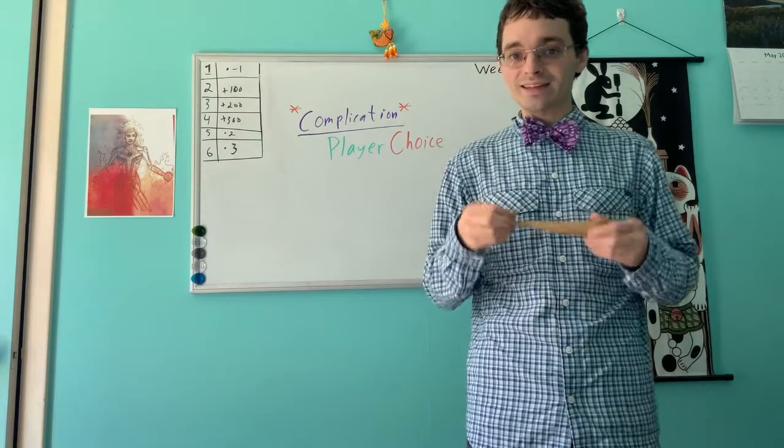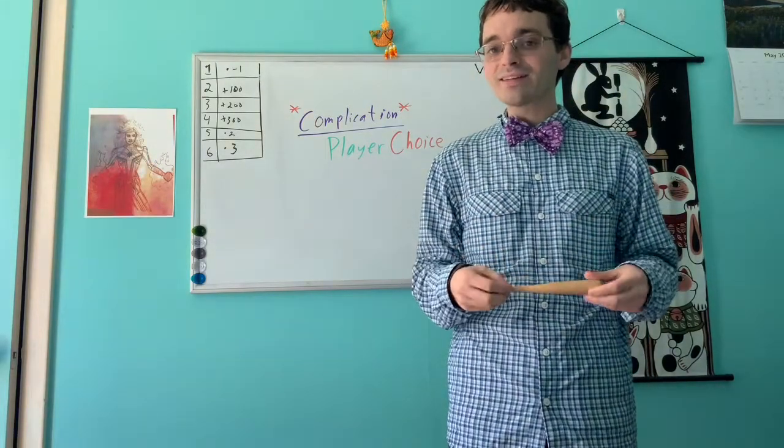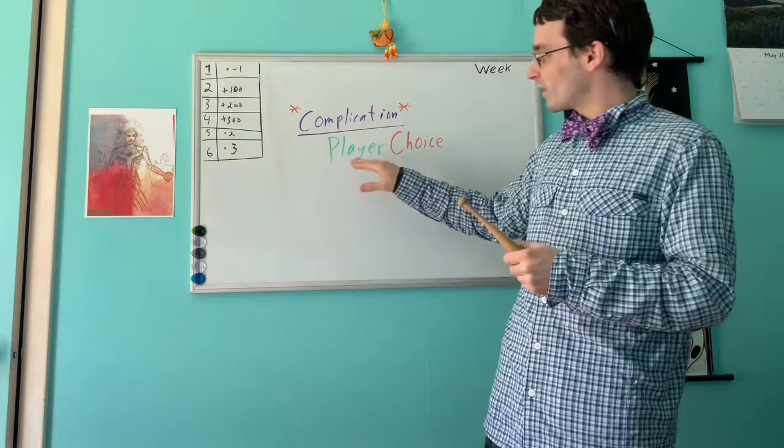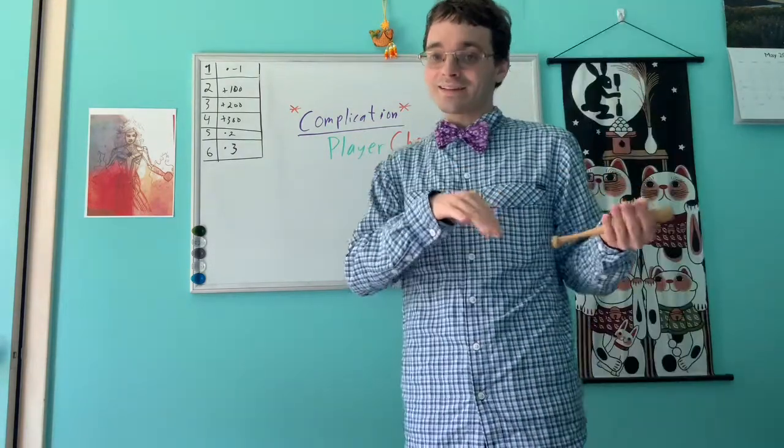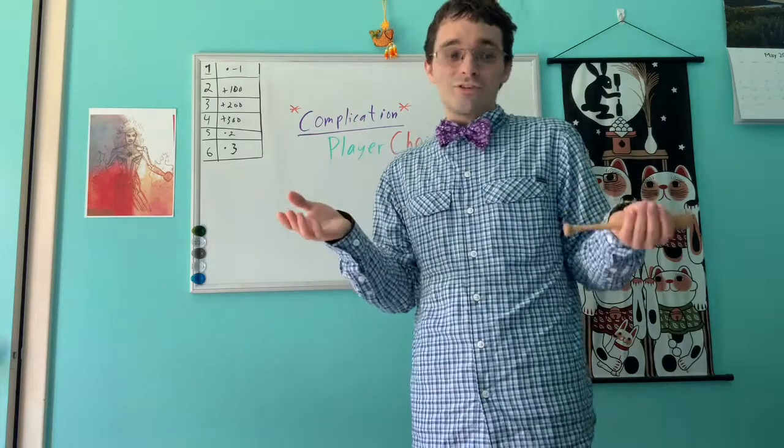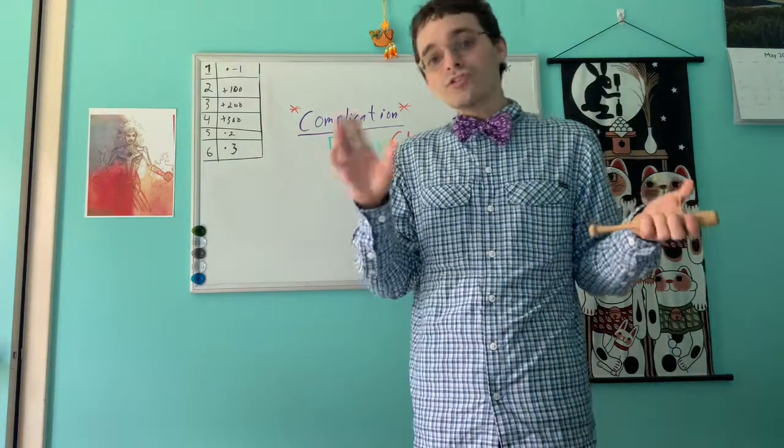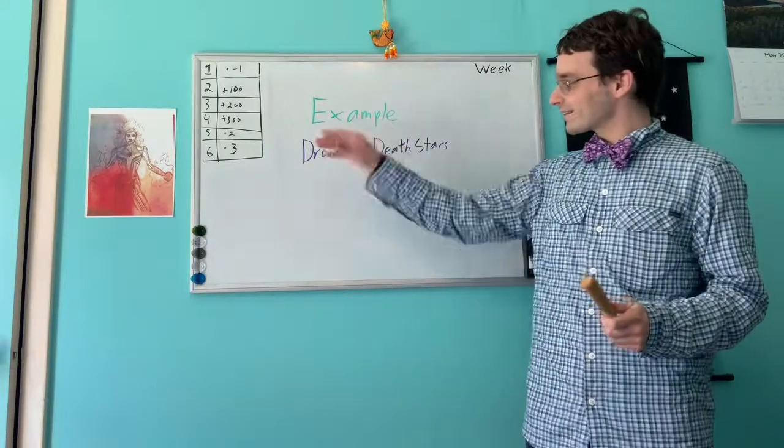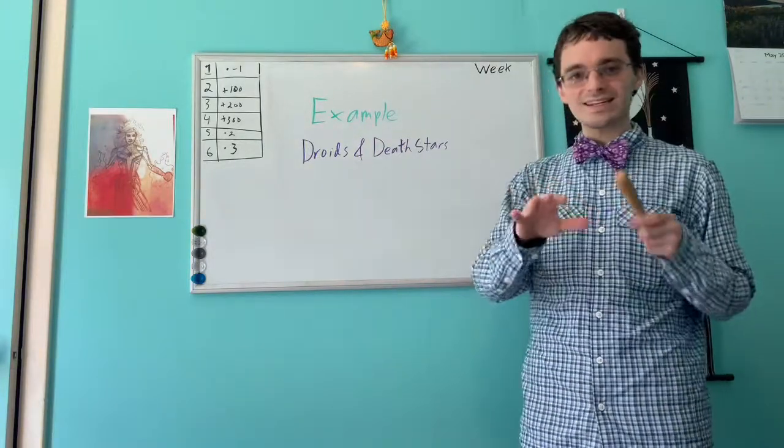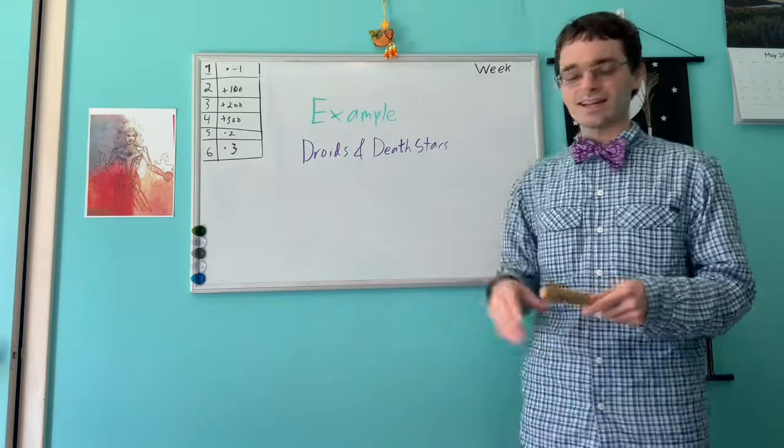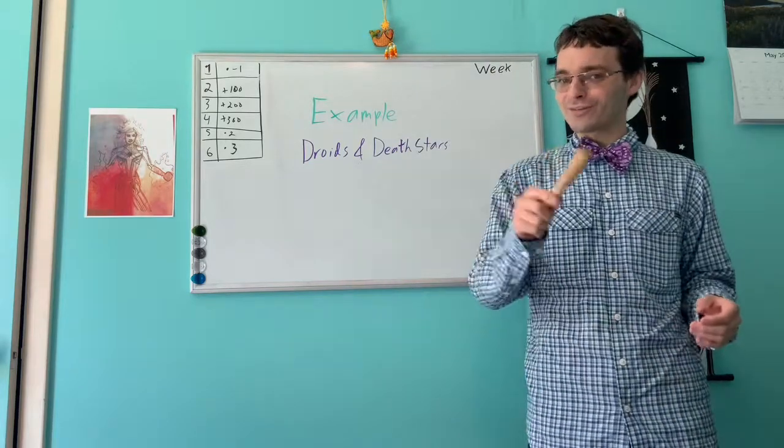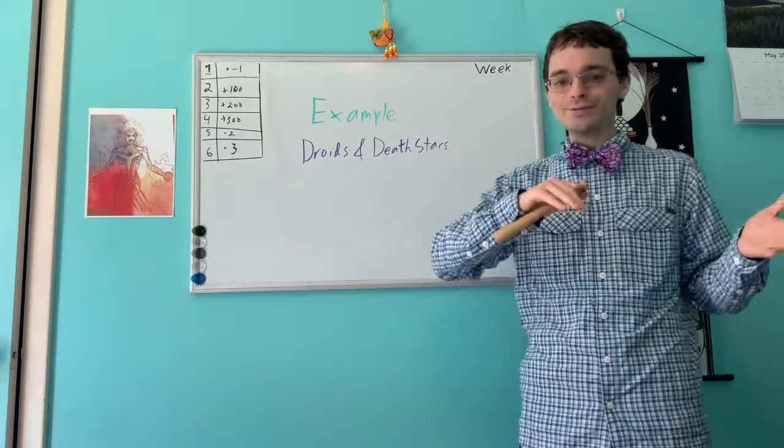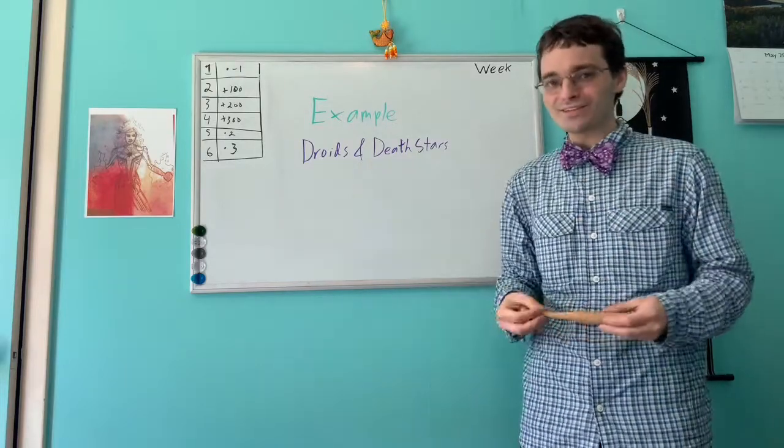Once you have established what the inciting incident is, it's okay to give them multiple directions. That's where player choice comes from. On the planning side, what that basically means is you only have to plan one thing. You just have to re-flavor it depending on where they go. Let's now go to this example. You're playing D&D droids and Death Stars. That's right. You are doing a Star Wars version of D&D where you are going through A New Hope.